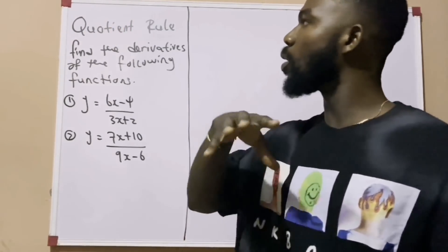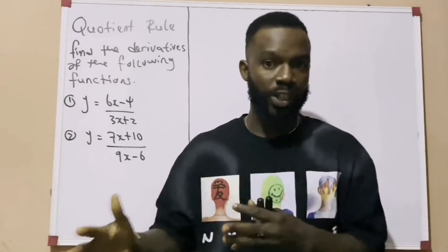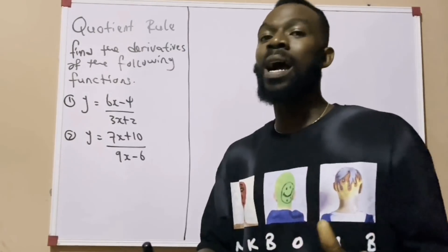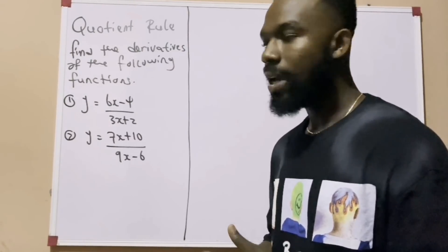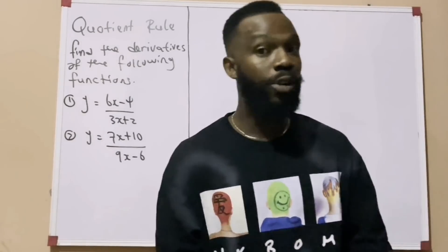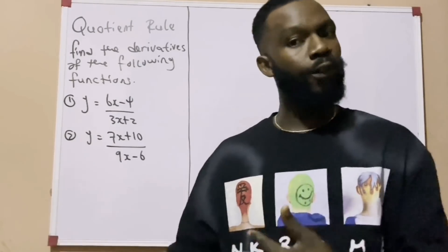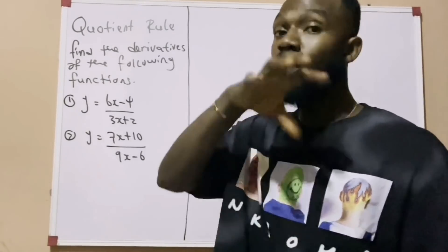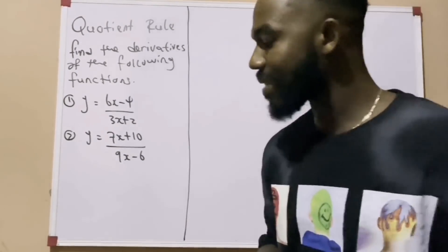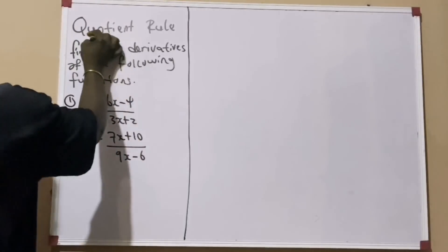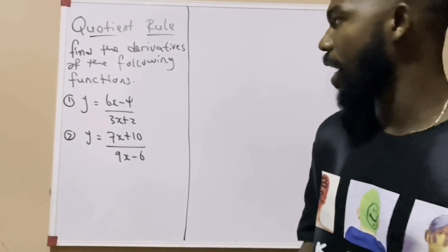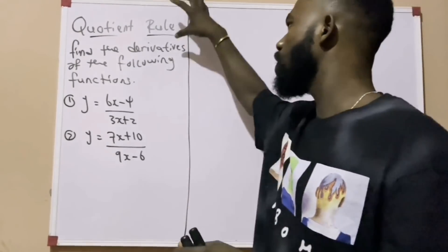Now we have been talking on differentiation for some videos now. So far we have been able to look at two rules: the chain rule, which is also known as the function of the function rule, and the product rule. Today we shall be looking at the quotient rule and how you apply it in solving differentiation problems. We have two examples on the board and we shall be using this rule to solve them.